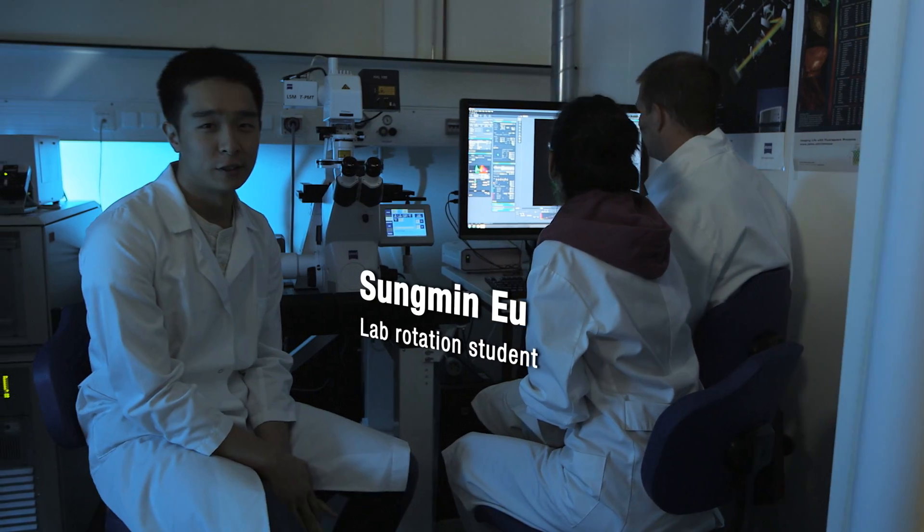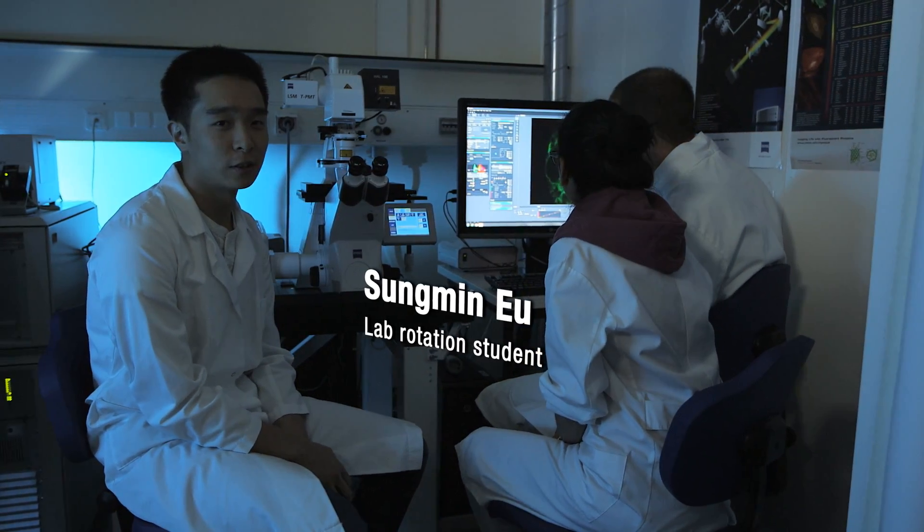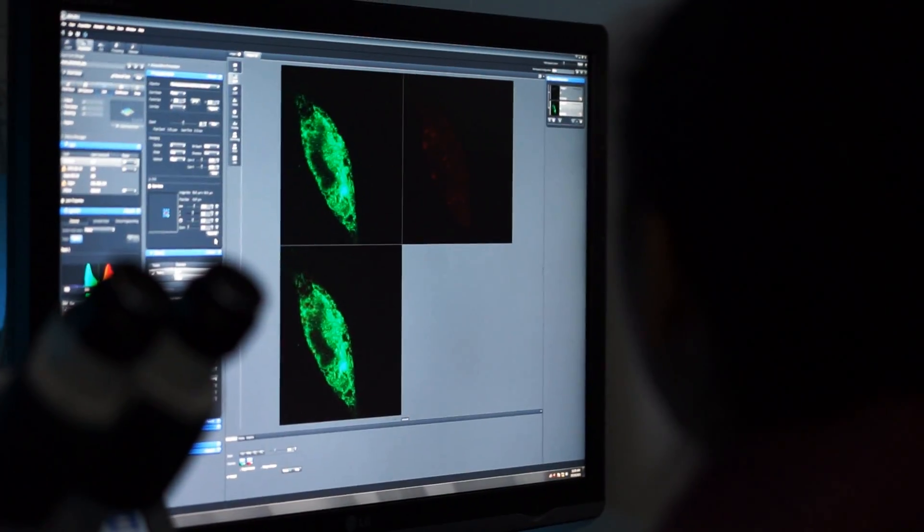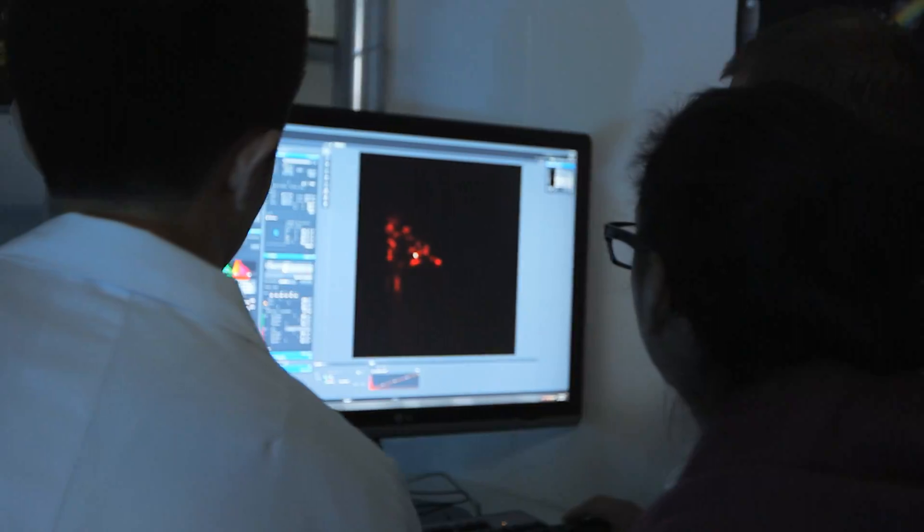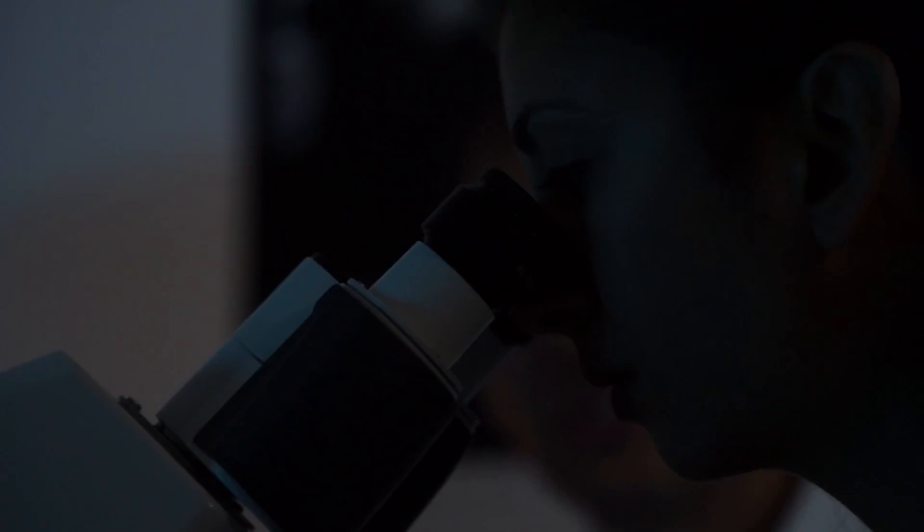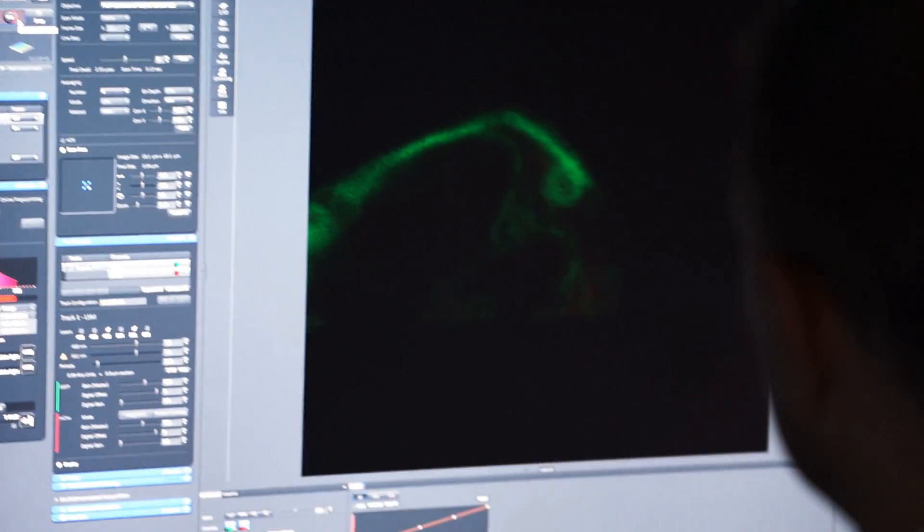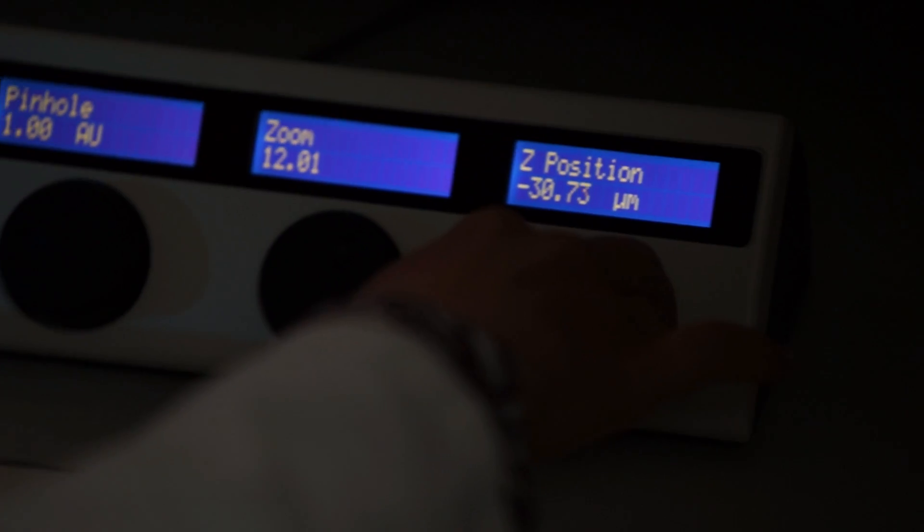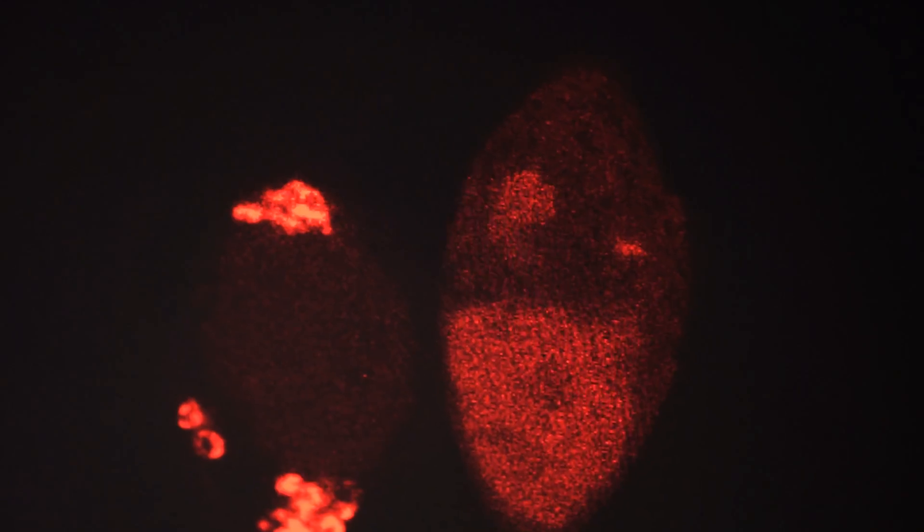One of the great advantages in ZMBH is that we have access to such great microscopic technologies. The light microscopy core facility here at the ZMBH provides for our researchers the instrumentation to do advanced light microscopy. We can resolve structures up to a millionth of a millimeter and observe what is really going on inside cells in real time.